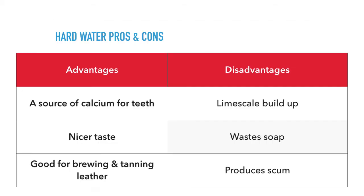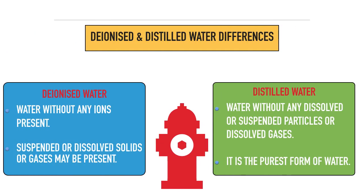You should know at least two pros and two cons for water hardness. A common misconception in chemistry for students is that distilled water and deionized water are the same — this is not the case. Deionized water is water that has no ions present, but still contains dissolved solids and dissolved gases. Whereas distilled water contains no dissolved or suspended solids and no dissolved gases. It is therefore purer than deionized water.